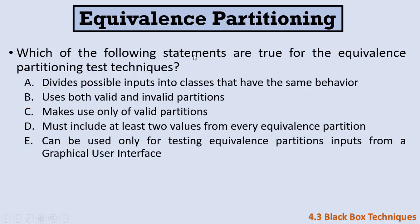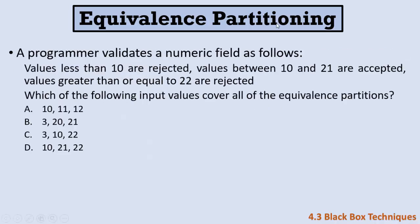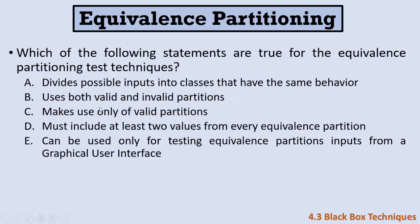The final question asks which statements are true about equivalence partitioning. Statement A — equivalence partitioning divides possible inputs into classes that have the same behavior — is correct. Statement B — it uses both valid and invalid partitions — is also correct, as we tested accepted and rejected values. Statement C — it makes use only of valid partitions — is wrong.